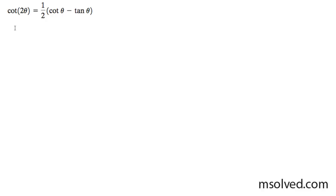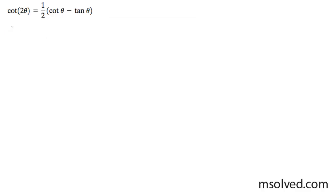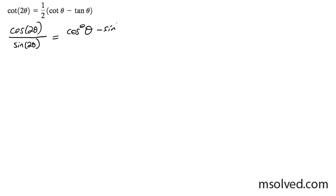We're going to prove the left identity is equal to the right. What I'm going to do first is break this down into the double angle equivalent. So I'm going to get cosine 2 theta over sine 2 theta. This can be broken down to cosine squared theta minus sine squared theta, and the double angle of sine simply becomes 2 sine theta cosine theta.